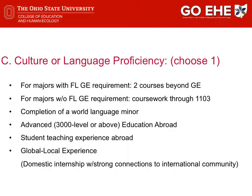GOE students have six options for the Cultural or Language Proficiency component. To satisfy this component, they may select one of the following: if their major requires a foreign language, take two additional foreign language courses beyond what is required; if their major does not require a foreign language, complete coursework through the third language course; completion of a World Language minor other than English; participate in an advanced 3000-level or above abroad experience; participate in student teaching abroad; or participate in a global local experience or an internship with a school, business, or institution with strong connections to an international community.